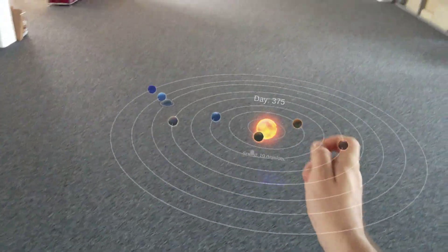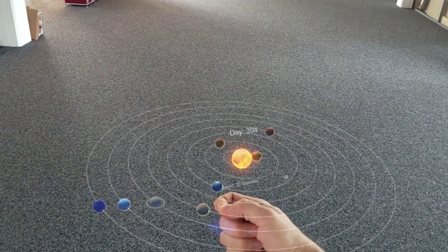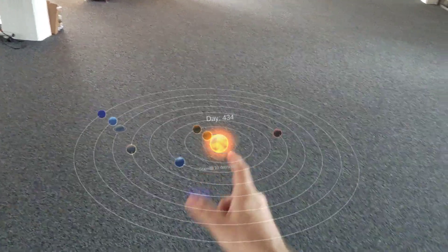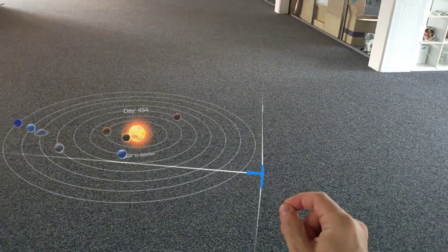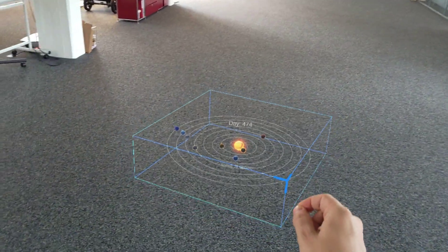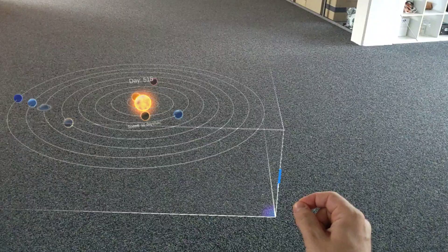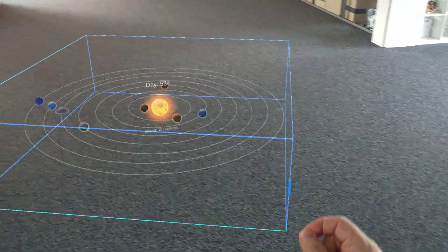This is a Solar System demo, one of our developers created for the HoloLens 2. We're still in the honeymoon phase with the device, exploring all the ways we can interact with holograms now. It's pretty exciting.